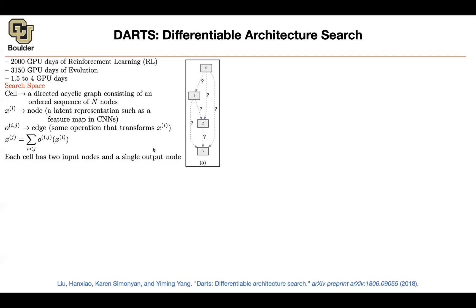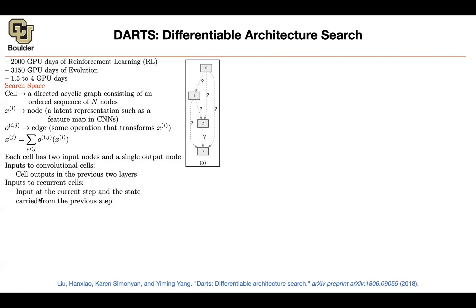For each cell you're going to have two inputs and a single output. If you have a convolutional cell with images, you take as input two previous layers — like what we were doing with DenseNet. If you have a recurrent cell, your inputs are your current state and the previous hidden step. At the same time, you're going to include a zero operation, which indicates there is no connection between two nodes, because in the end you're adding them up and you might not want any connection there.